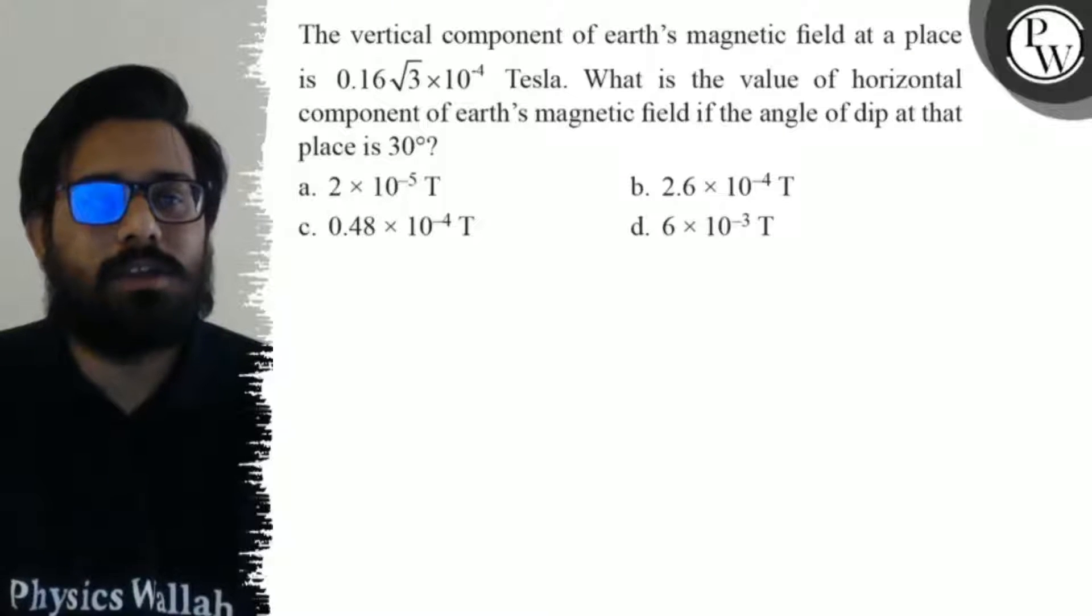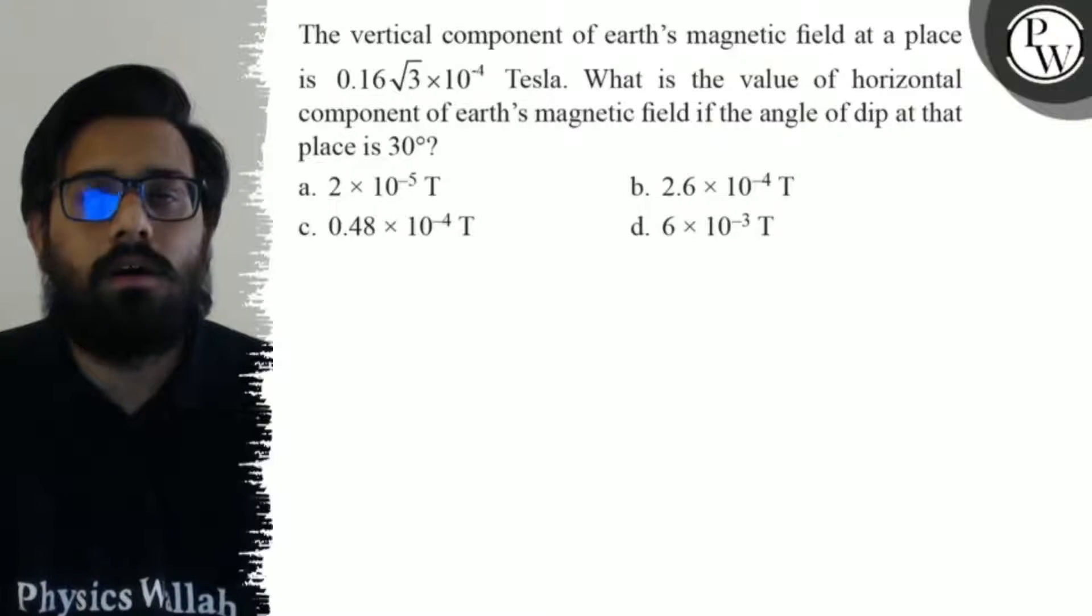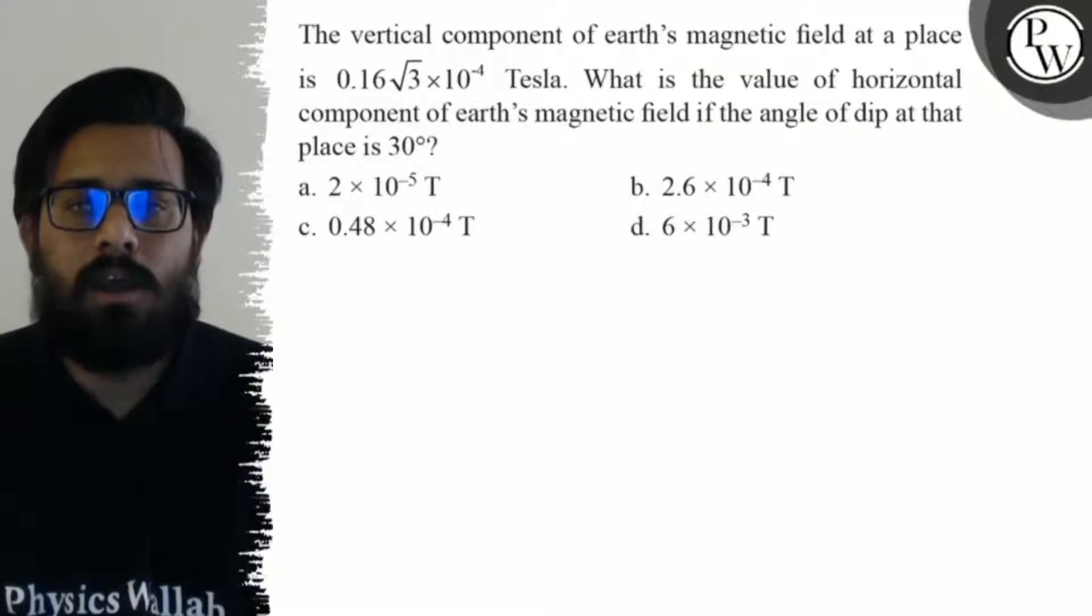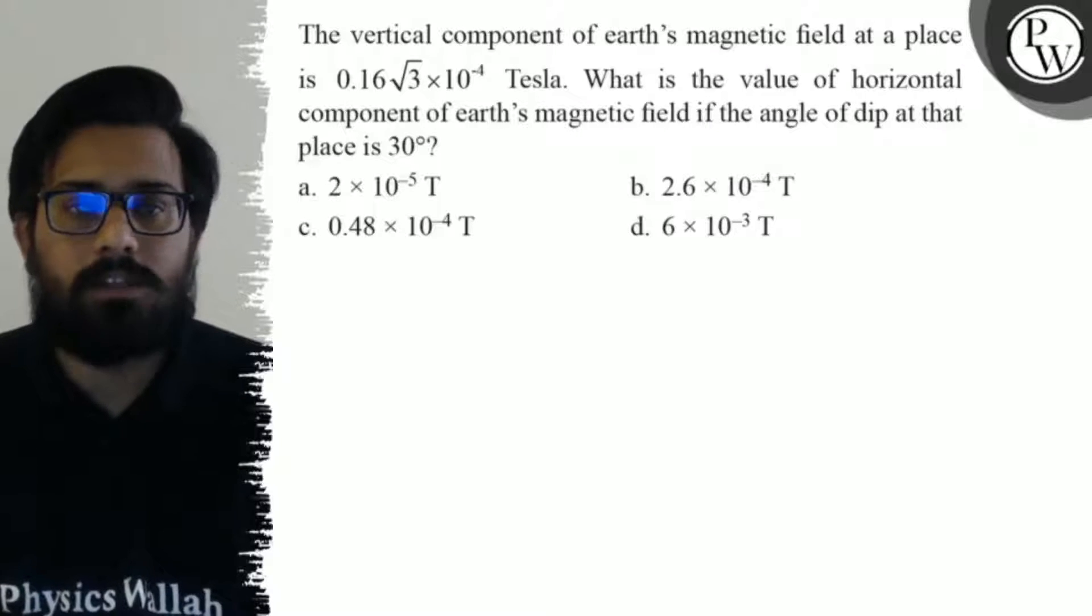Hello, let's see the question. The vertical component of the Earth's magnetic field at a place is 0.16√3 × 10^-4 Tesla. What is the value of horizontal component of the Earth's magnetic field if the angle of dip at that place is 30 degrees?